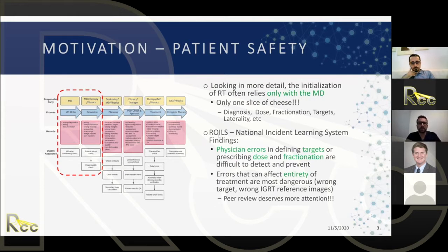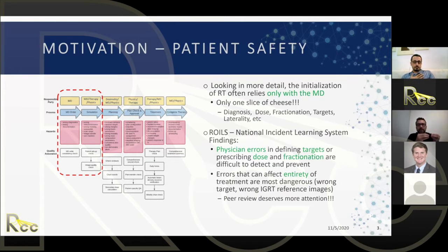ROSIS is a database of incidents or errors within the US where people submit errors they find in the clinic. A key finding is that physician errors in defining targets, dose, prescription, and fractionation are really difficult to detect because no one downstream has the expertise to double-check them. Things that can percolate through the entire treatment — like wrong targets or wrong prescriptions — are the most dangerous.